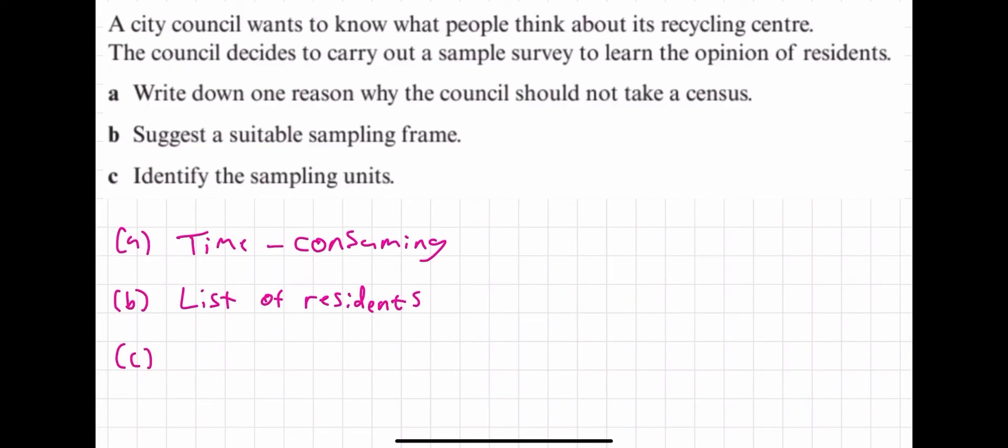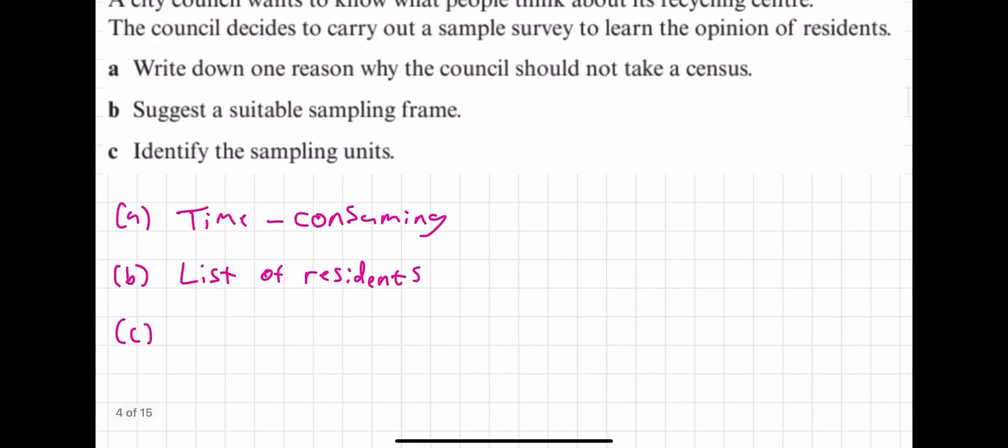Identify sampling units. Well, if it's a list of residents, that's our sampling frame, then our sampling units are just going to be the residents of the city. And that's easy, that's just common sense.